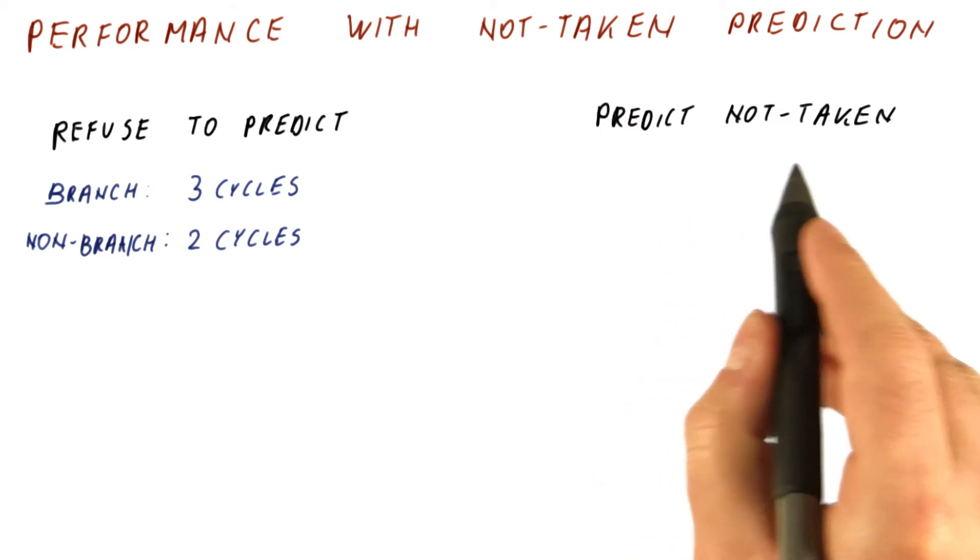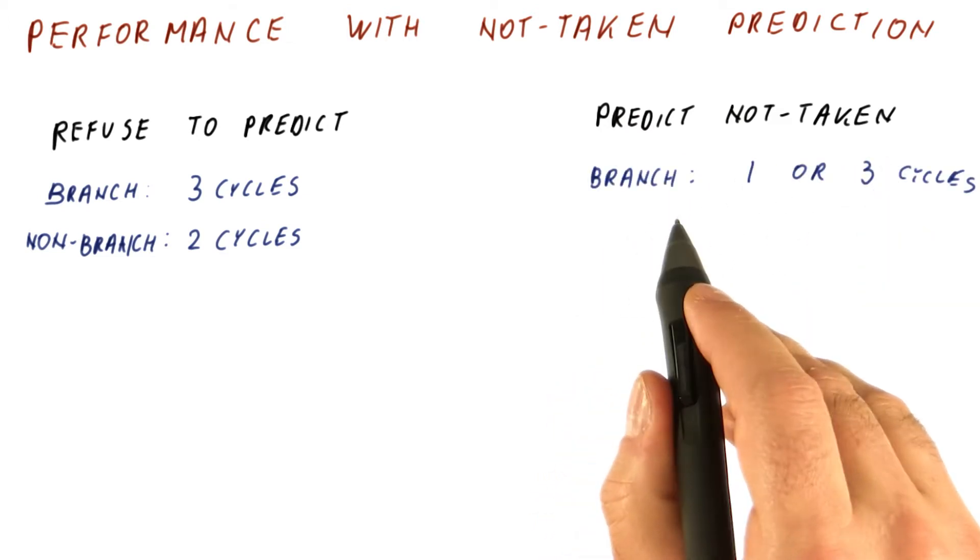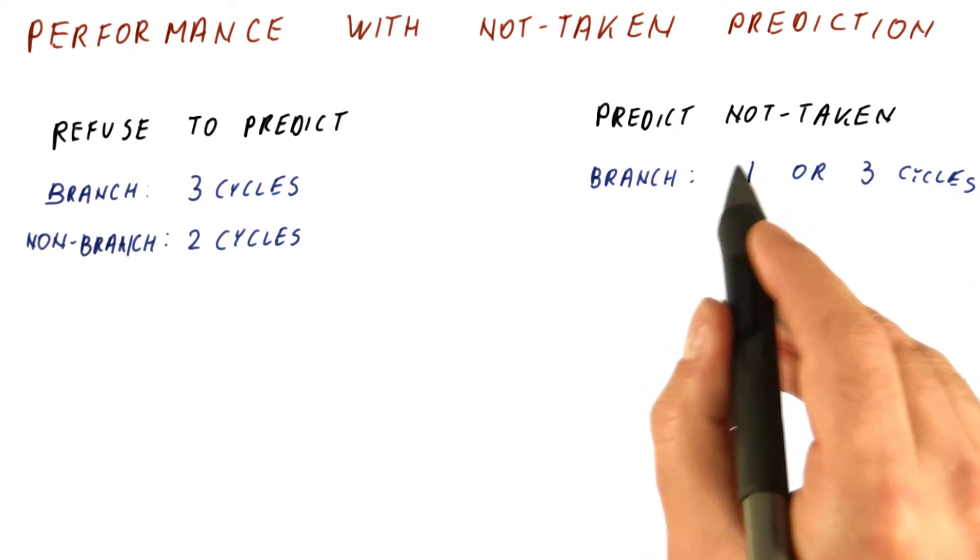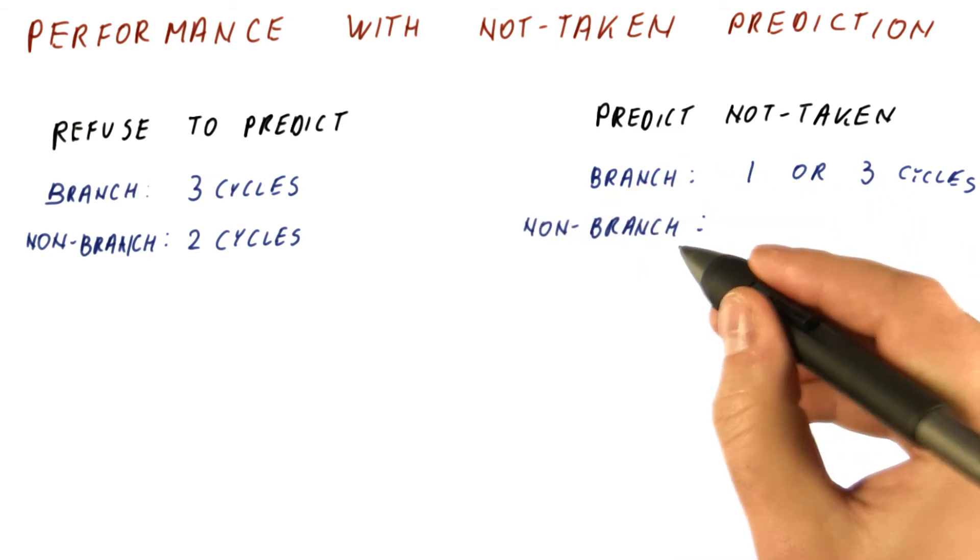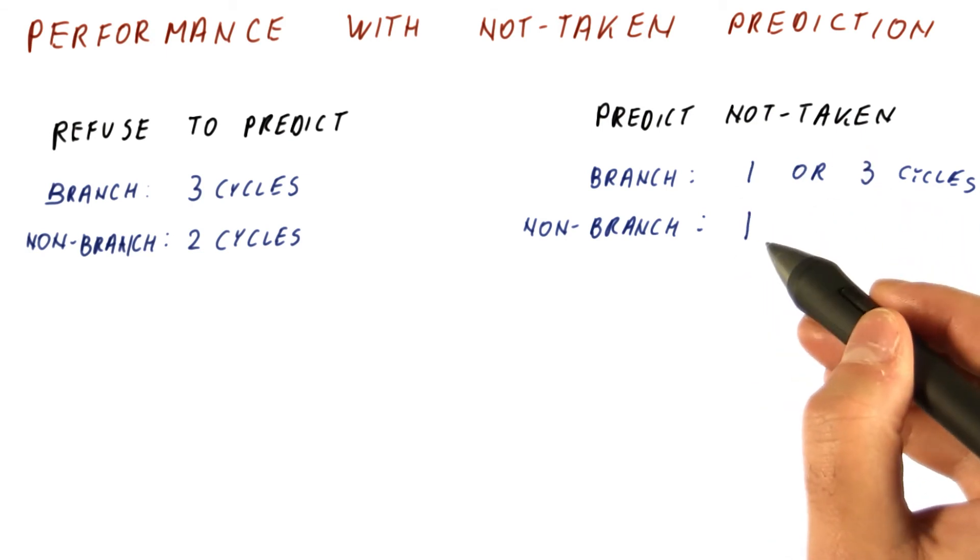When we predict that the instruction we are fetching is not a taken branch, we get that branches now cost us one or three cycles. One cycle for not taken branch, three cycles for a taken branch, and a non-branch instruction always costs us one cycle, because in that case the not taken prediction is always correct.